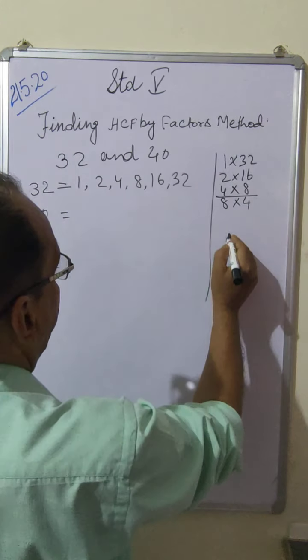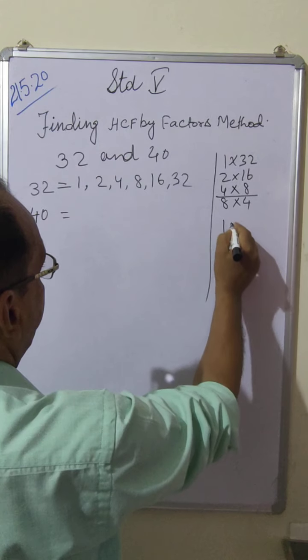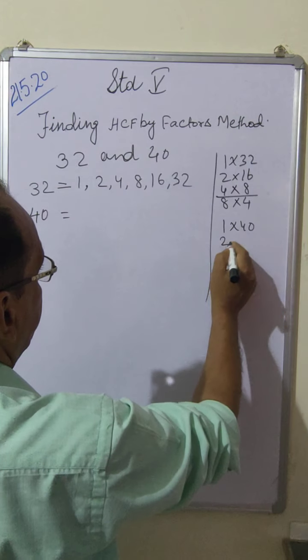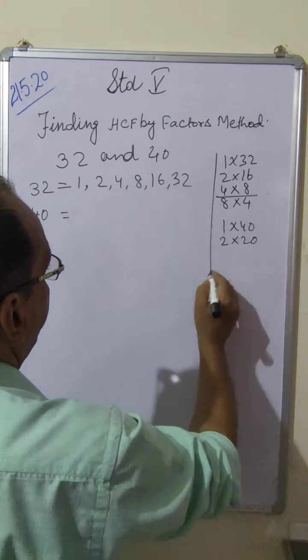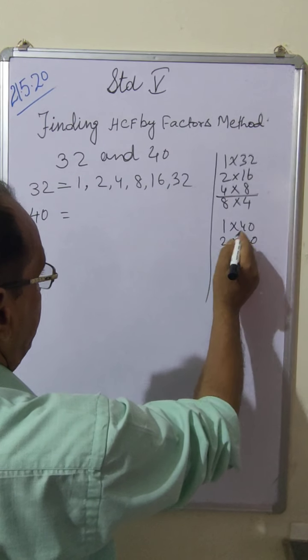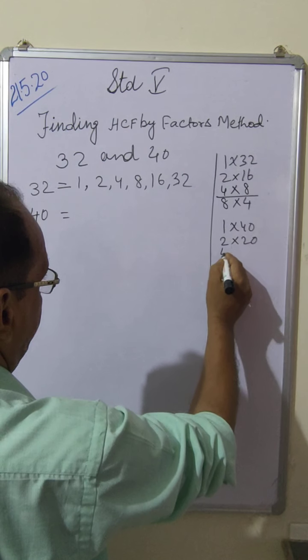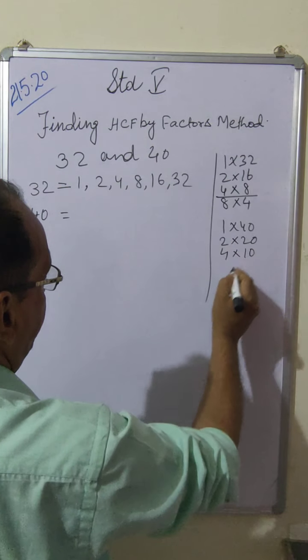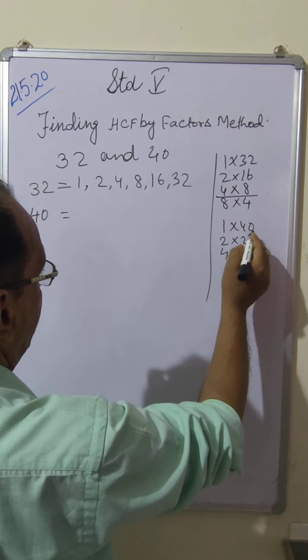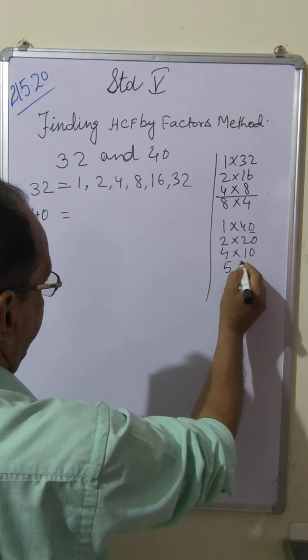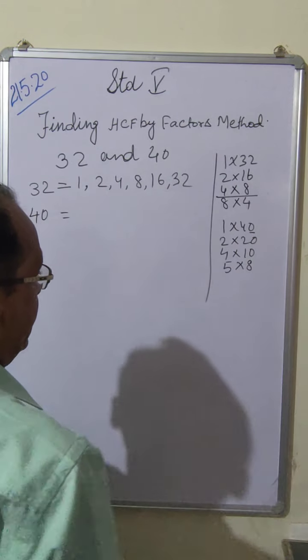Now again find the factors of 40: 1 into 40, even number so 2 into 20, then after 2 this number is not divisible by 3. So after 3 is 4, 4 times 10 is 40. After 4, 5 here is 0 so it is divisible by 5, 8 times.